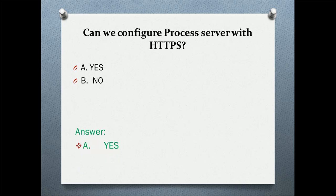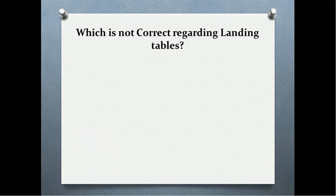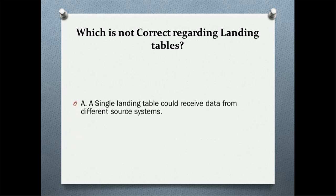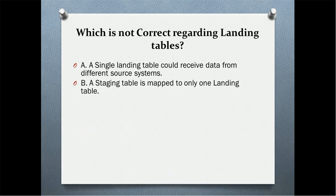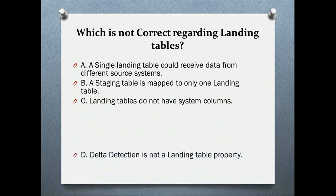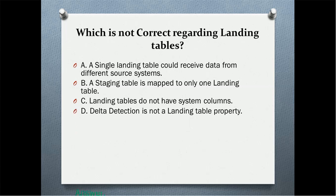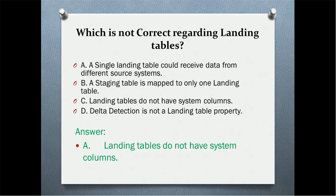Which statement is not correct regarding a landing table? A single landing table could receive data from different source systems; a staging table is mapped to only one landing table; landing tables do not have system columns; delta detection is not a landing table property. The answer is 'landing tables do not have system columns' — this is incorrect because landing tables do have system columns like last update date or source row ID.